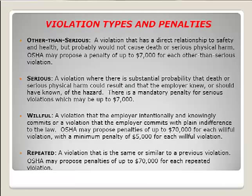Looking at violation types and penalties: the first level is an other-than-serious violation, which has a direct relationship to safety and health but probably won't cause serious physical harm, with penalties up to $7,000. The next level is a serious violation, where there is potential for serious injury or even a fatality. Crane and rigging, scaffold, fall protection, and electrical violations are always at least serious. The mandatory penalty can be up to $7,000 per occurrence.